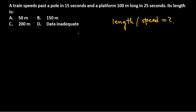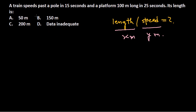Since both length and speed are not directly provided, we take the length of the train as X meters and the speed as Y meters per second. We have two variables X and Y, but we need to convert this into one variable. Let's find out how.